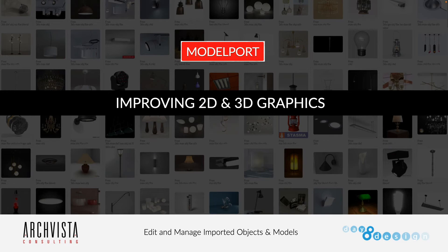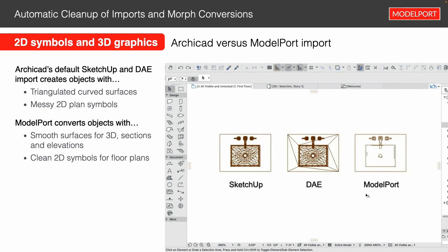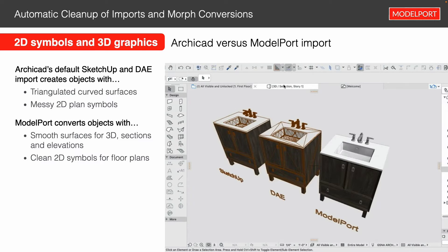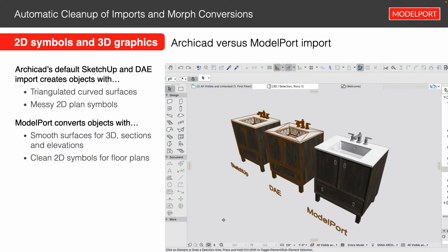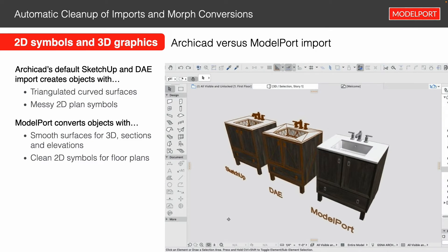Now let's talk about how to improve 2D and 3D graphics. ModelPort is designed to automatically clean up graphics for 2D and 3D when you import the object. When importing a SketchUp or DAE object, we often see really triangulated, messy graphics in 2D — but when we import with ModelPort on the right-hand side, it looks really good. Going to 3D, it does the same thing — the ModelPort object looks much cleaner, getting rid of all that triangulation on those polygons.